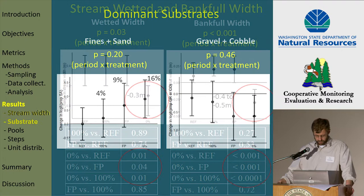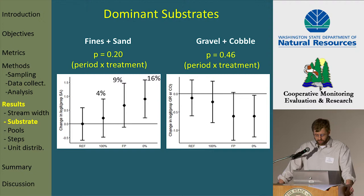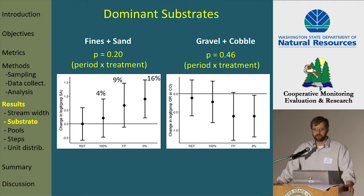For dominant substrates, we did not get a significant period-by-treatment effect, but we did get for the most part a linear response: as buffer length decreased, we saw an increase in the proportion of our intervals where fines and sand — our smallest substrate sizes — were dominant. We're talking about an increase of 4%, 9%, and 16% of our sample intervals as buffer decreases. The mirror image of that is a decrease in more or less linear fashion for the next largest substrate size, gravel and cobble.